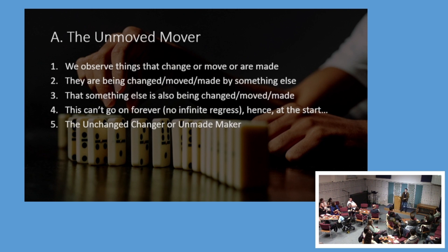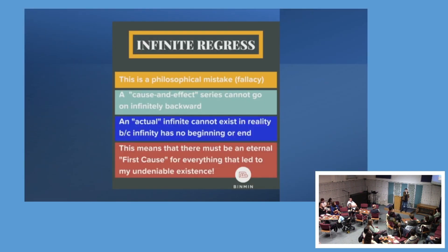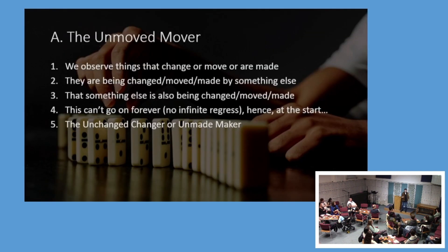Before that, someone built it, and there's a chain of events. But remember, there isn't an infinite regress — you can't have an infinite chain of movements, changes, and things being made. There has to be an unchanged changer, an unmade maker, an unmoved mover — a hand that presses the first domino to start the chain of motion.